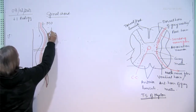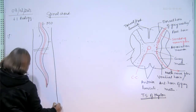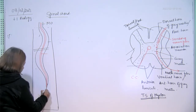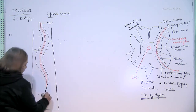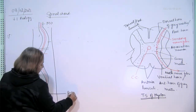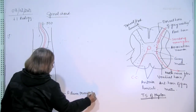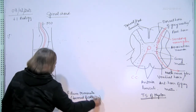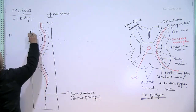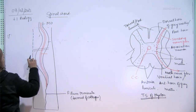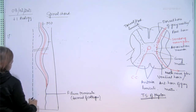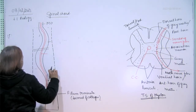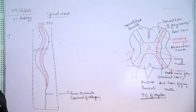The vertebral column is longer than the spinal cord. The spinal cord is attached to the vertebral column by a thread-like structure. There is also a filum terminale, which is a column of collagen — a protein and non-nervous tissue. The vertebral column has intervertebral spaces through which spinal nerves emerge.